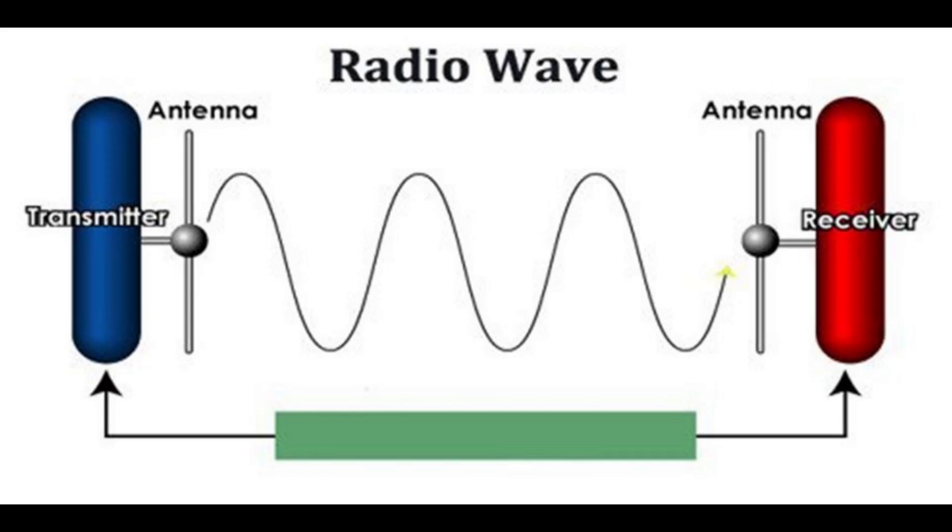The bandpass filter in the receiver consists of one or more tuned circuits which act like a resonator, similarly to a tuning fork. The tuned circuit has a natural resonant frequency set equal to the frequency of the desired radio station. The oscillating radio signal from the desired station causes the tuned circuit to oscillate in sympathy, and it passes the signal on to the rest of the receiver. Radio signals at other frequencies are blocked by the tuned circuit.